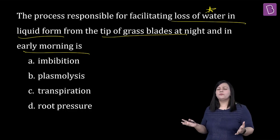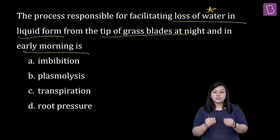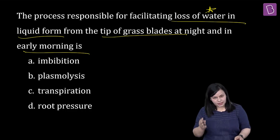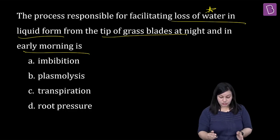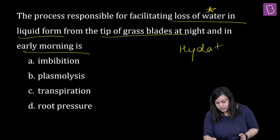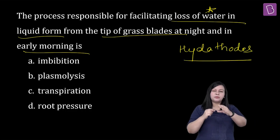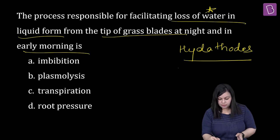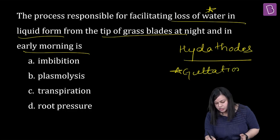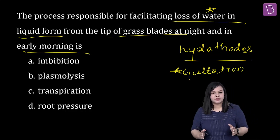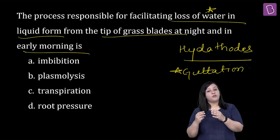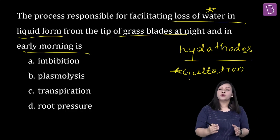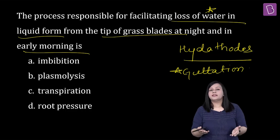So, we are talking about plant water loss, but not in the form of vapors — we are talking about water loss in the form of liquid. This whole process from the Transport and Plants chapter is called Guttation. Guttation hota hai loss of water in the form of liquid, specially through openings called hydathodes, which are present at the margin of leaves — adaxial and abaxial surface.